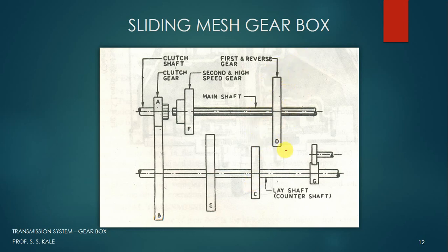Gear D is mounted on the main shaft using a spline arrangement. The main shaft has external splines whereas gear D has internal splines, so the internal splines of gear D mesh with the external splines of the main shaft. With this spline arrangement, rotary relative motion is not allowed — meaning gear D cannot rotate without rotating the main shaft and vice versa. However, horizontal relative motion is allowed, meaning gear D can move horizontally along the shaft without moving the main shaft.